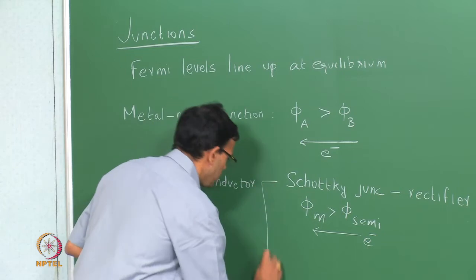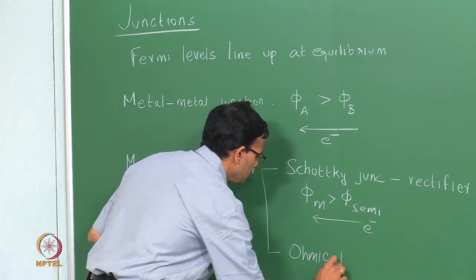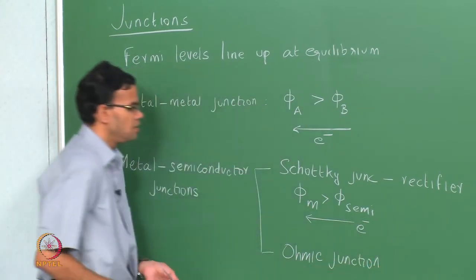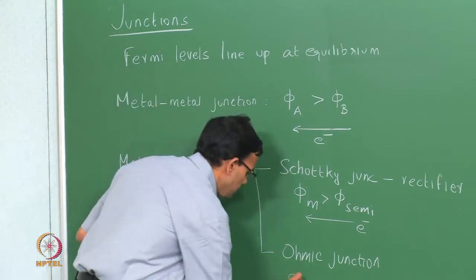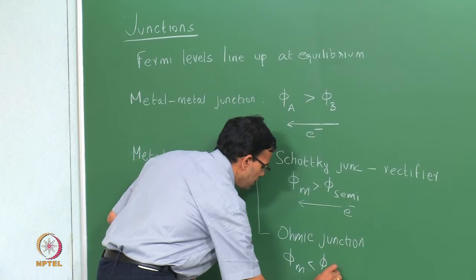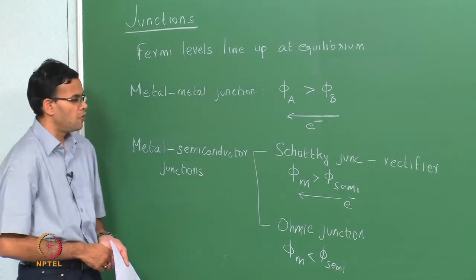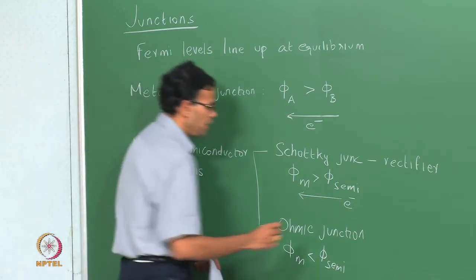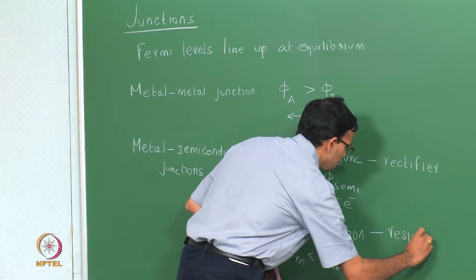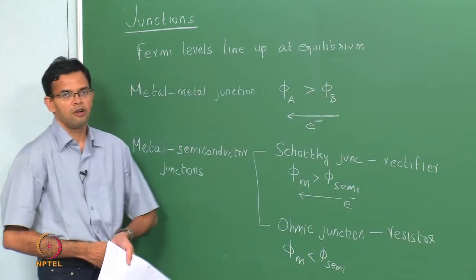The other type of junction we saw was the ohmic junction. In this case, the work function of the metal is smaller than that of the semiconductor, so electrons flow the other way and the ohmic junction behaves as a resistor. This is where we left off from last class.